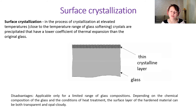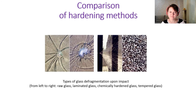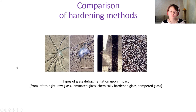The surface layer of hardened glass can be either transparent or opaque/cloudy. Comparing different hardening methods after a hard impact on the glass, we can see differences between raw glass, laminated glass, chemically hardened glass, and tempered glass — chemically hardened glass looks the best.